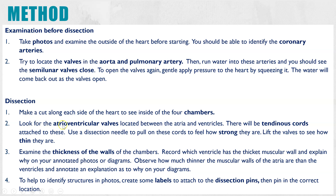Once you've done that, you should be able to identify the atrioventricular valves, which are the valves found between the atria and the ventricles. There are long thin white tendinous cords attached to them. Try using the dissecting needle to pull up on those cords slightly — you'll be able to feel how strong they are. By lifting the tendinous cord you should also be able to see the valves; they're so thin you can actually see through them. Document that in a photo so you can annotate it in your write-up.